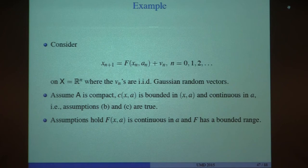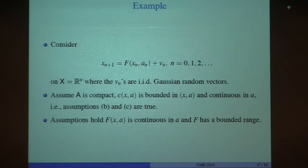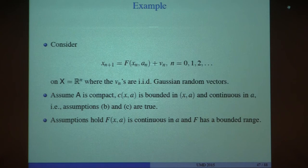Here is an example. If the function f is continuous and bounded, then you have weak continuity. If f is continuous and v has a continuous density, then you have setwise continuity. If f is additionally Lipschitz in a and x, and the noise density is Lipschitz—as in the Gaussian case—then you have total variation continuity. So we can find conditions for such a setup to justify our results.